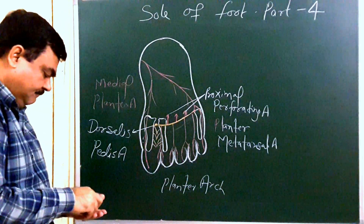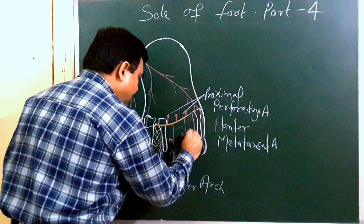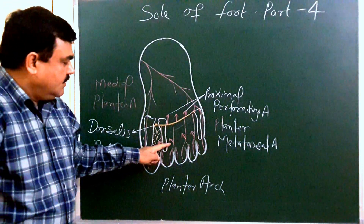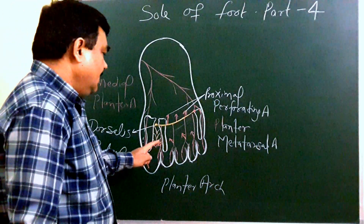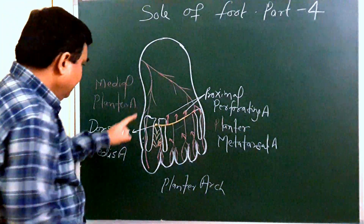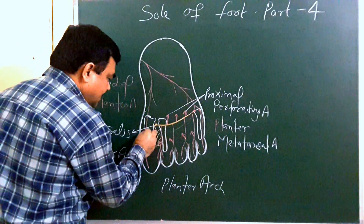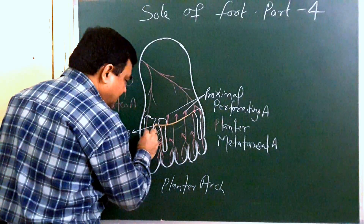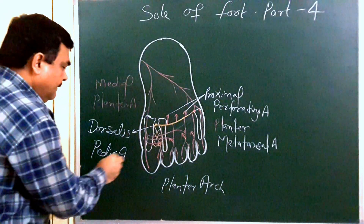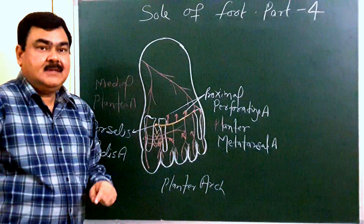There are four distal perforating arteries which communicate with the distal dorsal metatarsal arteries. The medial plantar artery also gives a superficial digital branch, which communicates with these plantar metatarsal arteries.